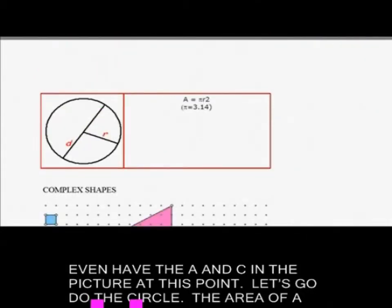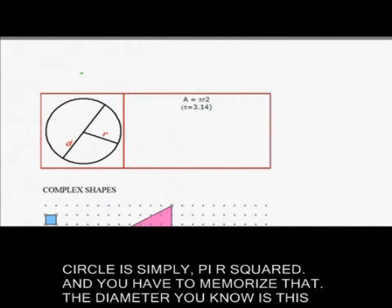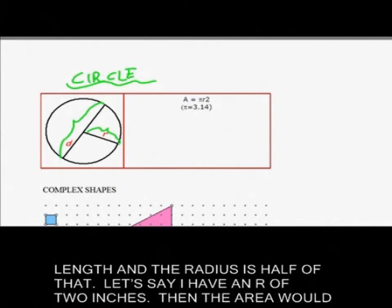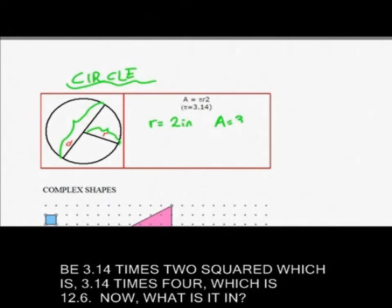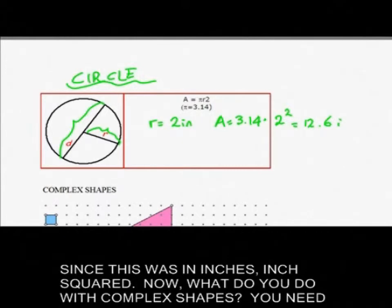Let's go do the circle. The area of a circle is simply pi r squared and you have to memorize that. The diameter you know is this length and the radius is half of that. Let's say I have a radius of 2 inches. Then the area would be 3.14 times 2 squared which is 3.14 times 4 which is 12.6. Since this was in inches, inch square.